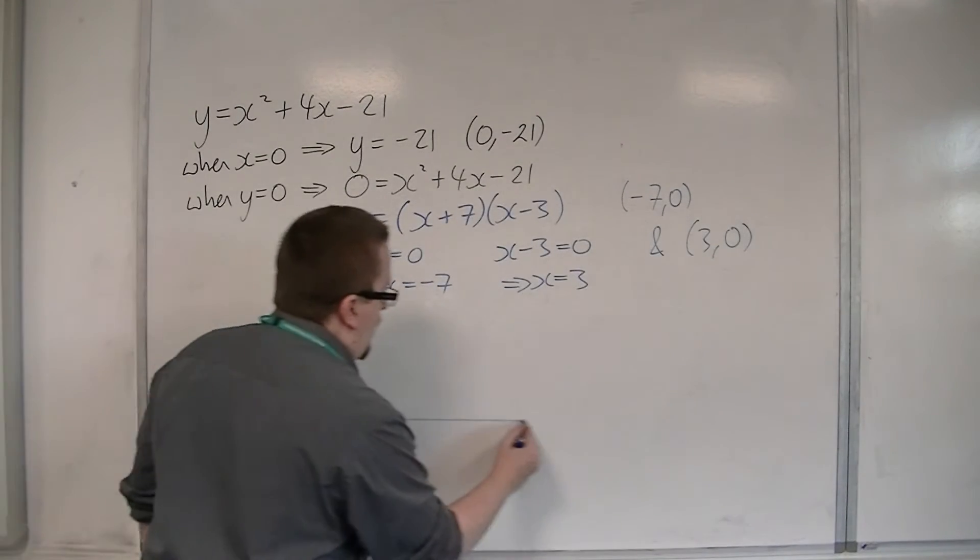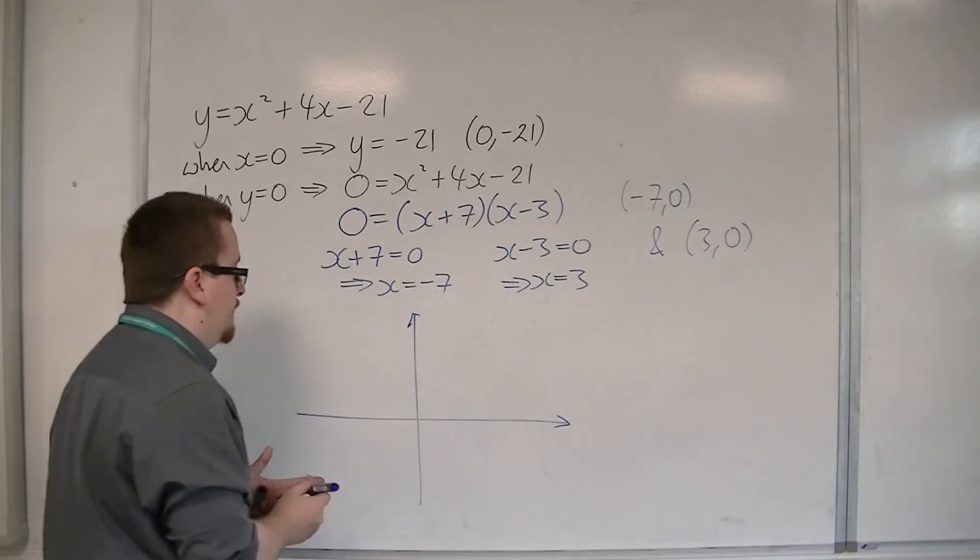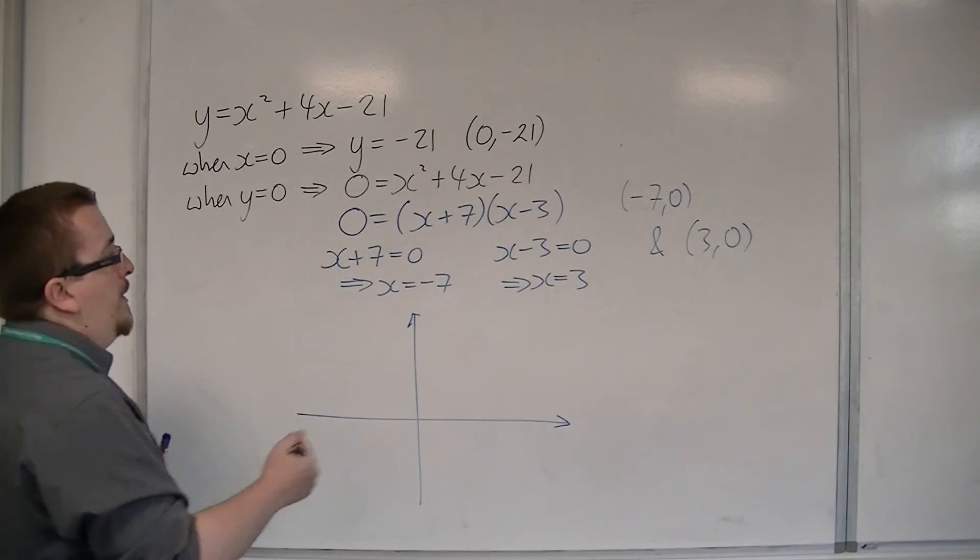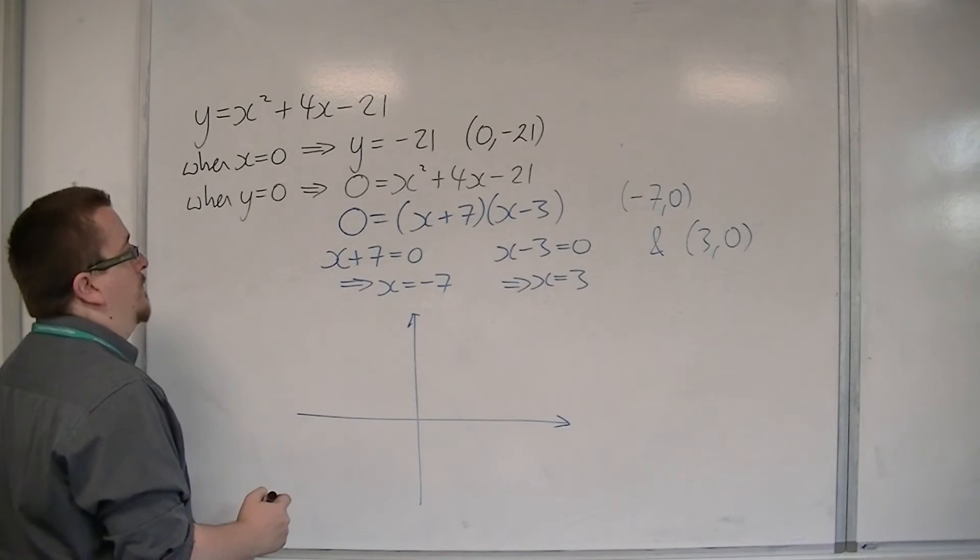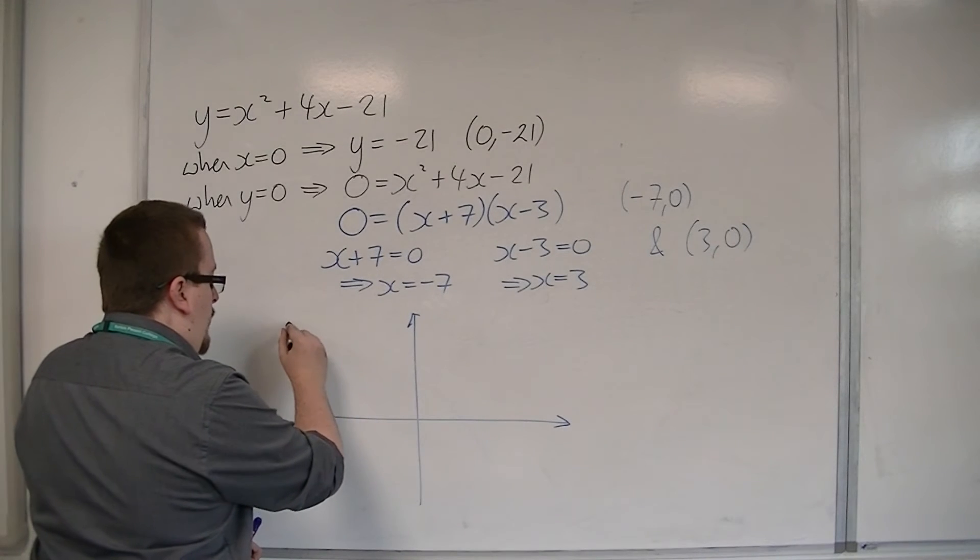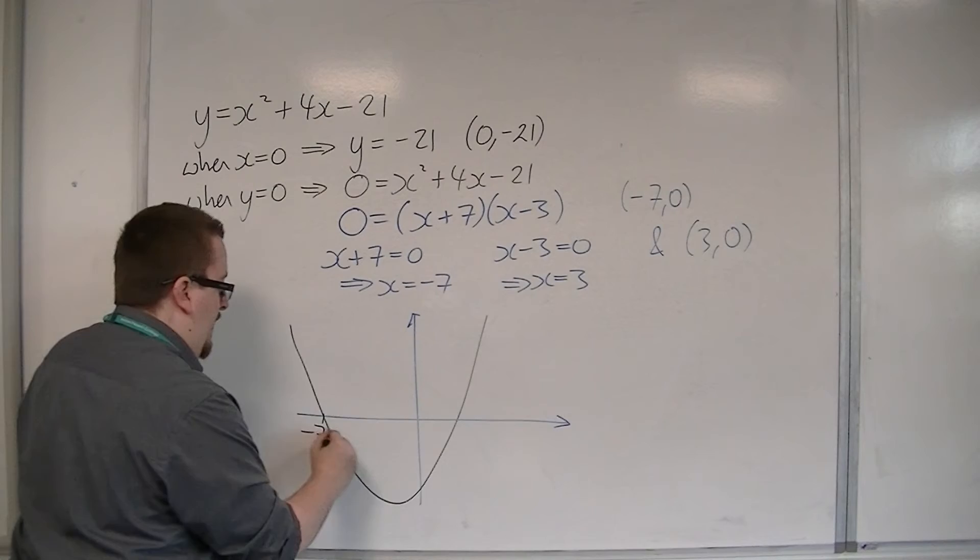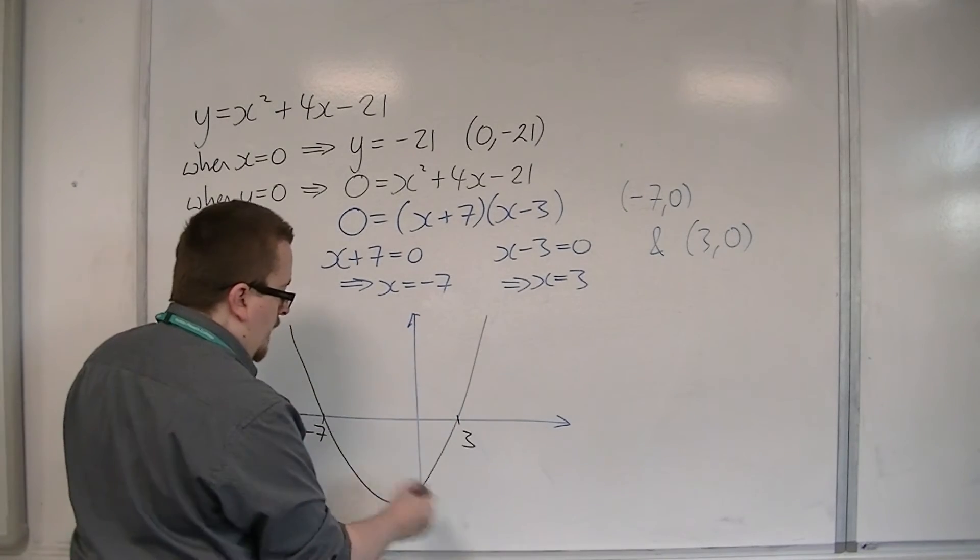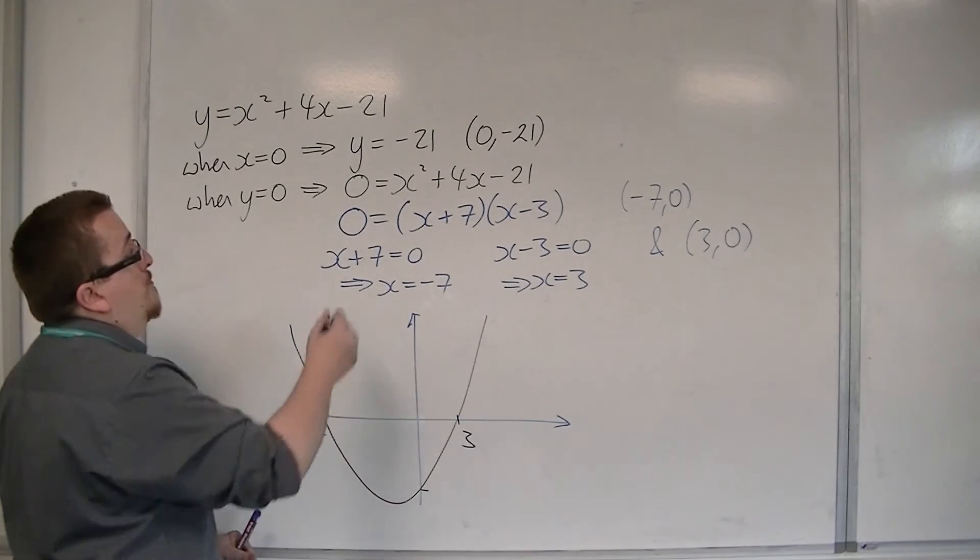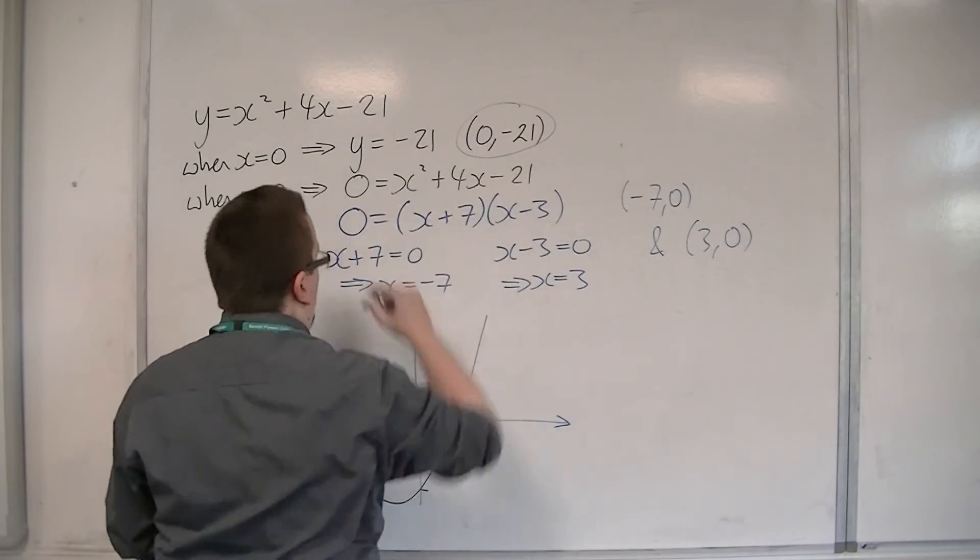So we're now in a position where we can sketch the curve. If it's going through minus 7 and 3, then it must look something like this. Minus 7 and 3. It's going through minus 21 on the y-axis.